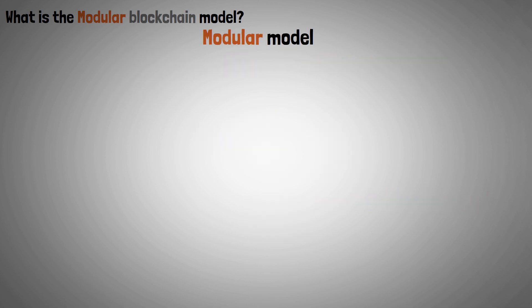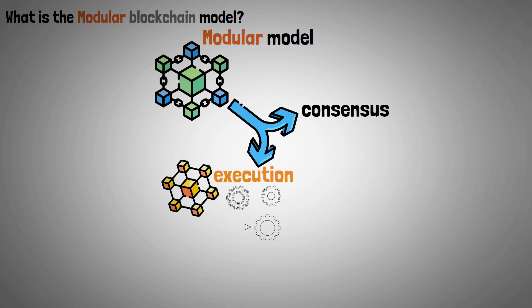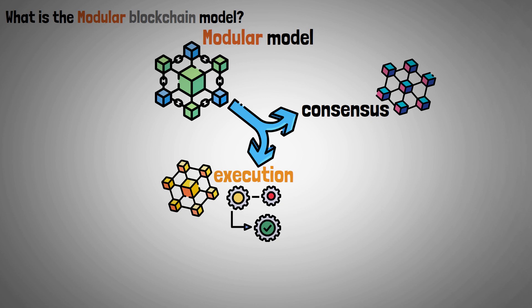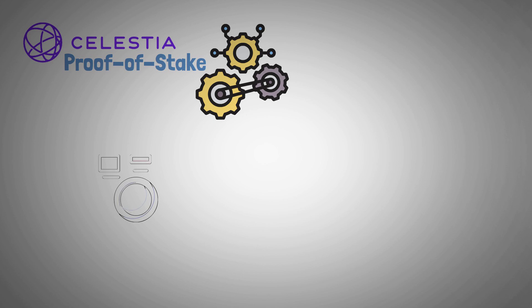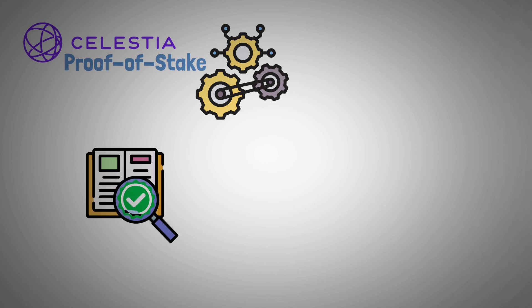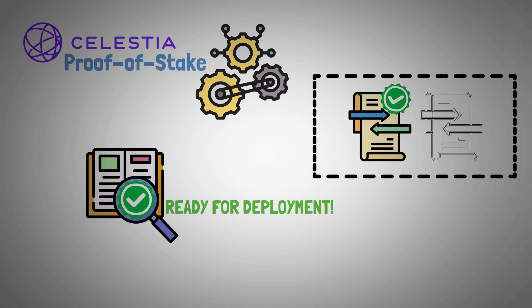But in the modular model, the blockchain separates consensus and transaction execution. In other words, one blockchain is in charge of execution while the other is in charge of consensus. As a result, Celestia uses proof of stake to serve as its consensus mechanism. Celestia reads the raw data and verifies that the data is prepared for deployment rather than having to confirm every transaction that occurs.